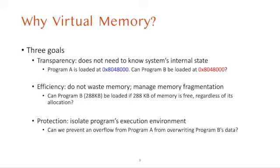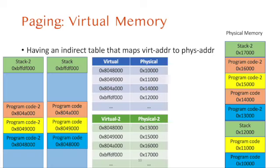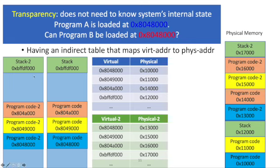We also learned about the three goals of virtual memory. Virtual memory provides one level of indirection from virtual to physical address. The first goal is transparency: we can let application programs use any virtual address of their choice regardless of the system state. Even if one program has already loaded its code, stack, and data to specific virtual addresses, we can reuse those virtual addresses for another program, because virtual addresses are private to each process.